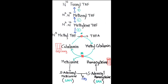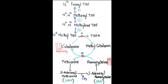Since methyl-THF cannot be reconverted, it must be converted back into the active form, tetrahydrofolic acid (THF), for regeneration. This regeneration from methyl-THF requires vitamin B12, also called cobalamin. Cobalamin accepts the methyl group from methyl-THF to form methylcobalamin. In the deficiency of cobalamin, THF cannot be regenerated from methyl-THF, so folic acid becomes trapped in the form of methyl-THF.